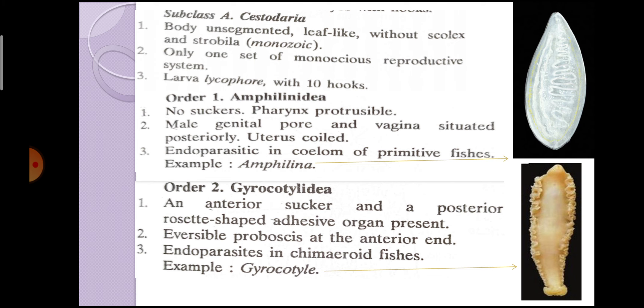The first order of Subclass Cestodaria is Order Amphilinida. Suckers are absent, the pharynx is protrusible. The male genital pore and vagina are situated posteriorly, and the uterus is coiled. They are endoparasites in the coelom of primitive fishes. The example is Amphilina, whose diagram can be seen above.